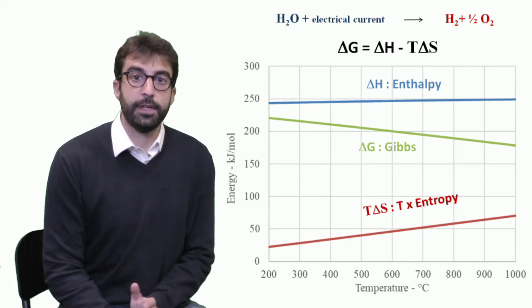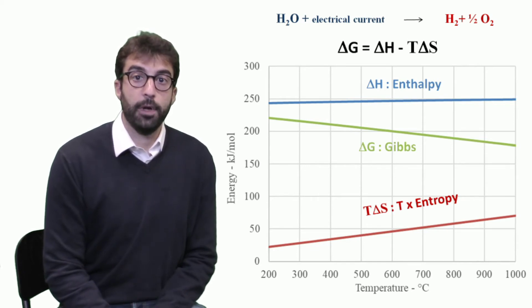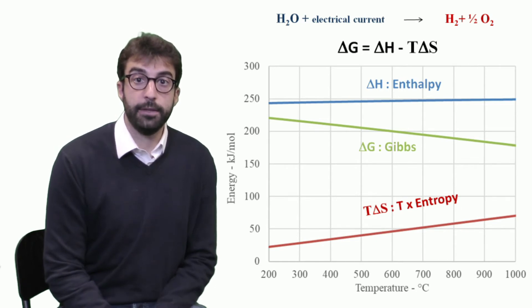So if we increase temperature, we have a double increase of entropy and enthalpy, but a decrease of Gibbs energy. And why this is important?